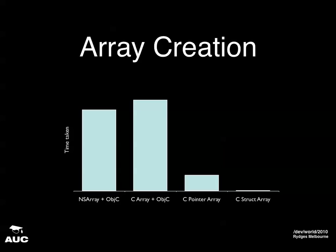NSArray is Cocoa's managed version of C arrays. It allows you to add, remove, and iterate through things, but works on Objective-C objects only. Looking at this slide, there's about a 10-times speed difference when creating an array between NSArray with Objective-C objects versus pure C arrays. The reason is that object creation in Objective-C is slow — you have to allocate the object, unlock it, and call init via a selector. For each object in the inheritance chain, init must be called again.